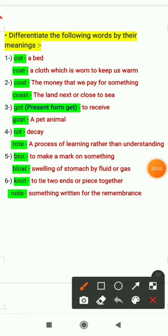Differentiate the following words by their meanings. Here some words are being given. We have to differentiate the words by telling their meanings. First word is cot, it means a bed. Second is coat, a cloth which is worn to keep us warm in winter season. Next is cost, the money that we pay for something. When we purchase something, the money we pay is called cost.